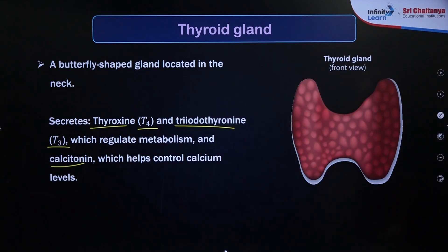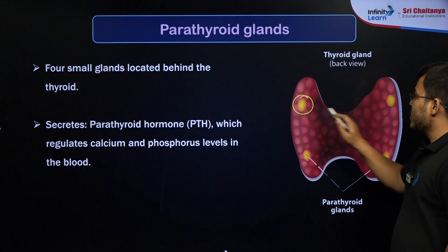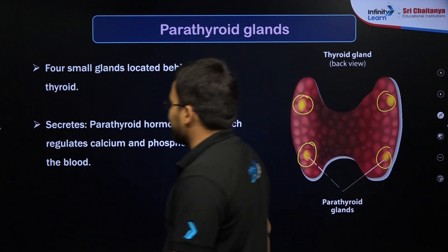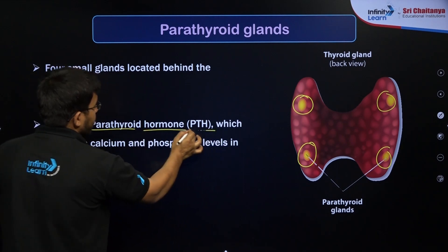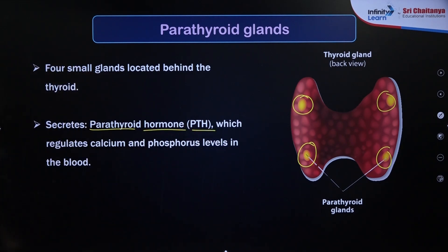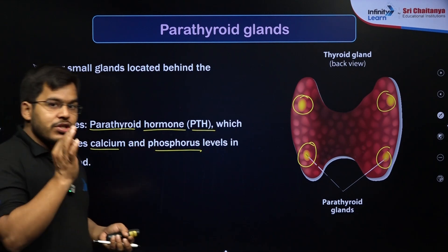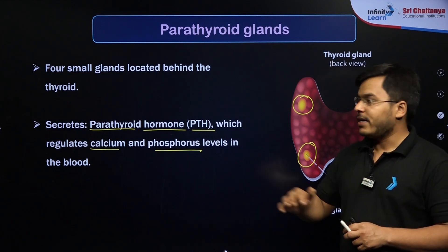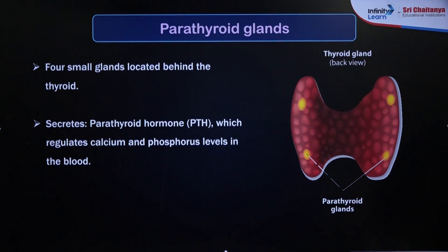We also have four parathyroid glands situated on the four corners of the thyroid gland on its back side. The parathyroid gland releases one very important hormone: parathyroid hormone (PTH). This hormone regulates calcium metabolism and calcium levels in the blood, as well as phosphorus levels. So both calcitonin and PTH regulate calcium and phosphorus levels in the blood.